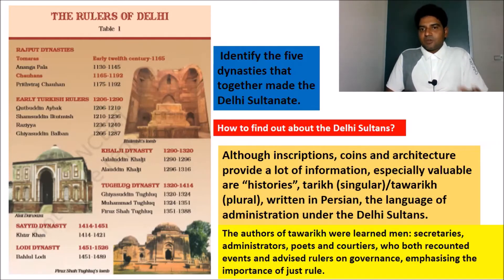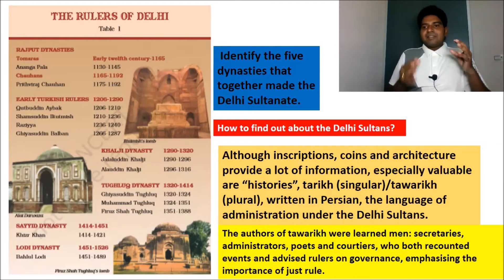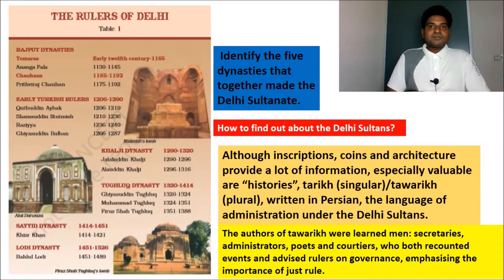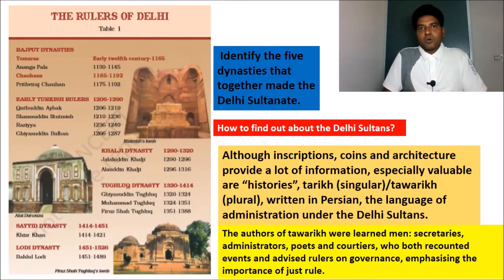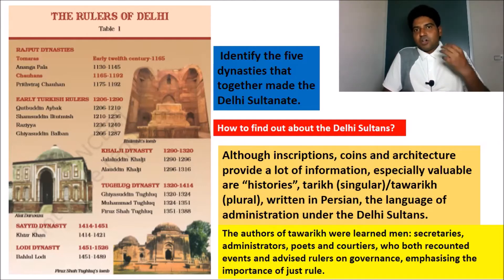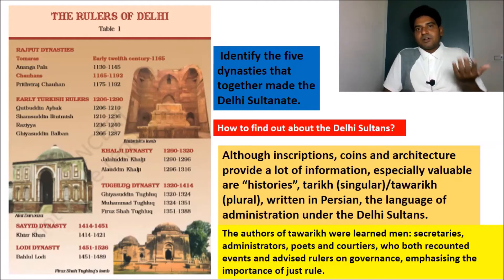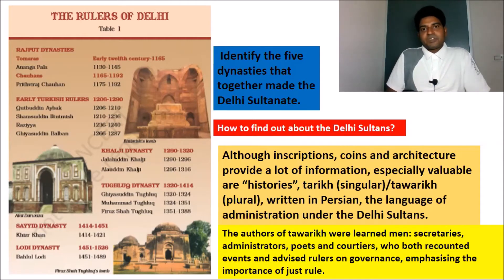To summarize: coins, inscriptions, and architecture are the major sources from which we get a lot of information about the Delhi Sultans. In addition, there are valuable historical writings called Tarik or Thawariks, written in Persian because Persian was the official administrative language during the Delhi Sultans' rule. The authors of these Thawariks were those assisting the kings — acting as secretaries, poets, artisans, and courtiers — who also advised the king on governance and the importance of just rule.